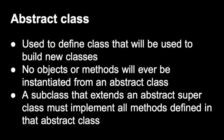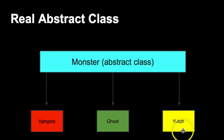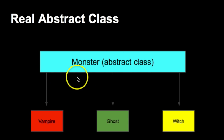Abstract classes are typically used when you know a lot about an object and what you want to do with it, but there are still a few unknowns. For a real-world example: we have an abstract class called Monster, made up of Vampire, Ghost, and Witch. Monster is the abstract class — the generality — while Vampire, Ghost, and Witch are the concrete, or specific, classes. These three classes inherit all the methods and functionality of the abstract class, but we won't ever actually instantiate the Monster class itself.